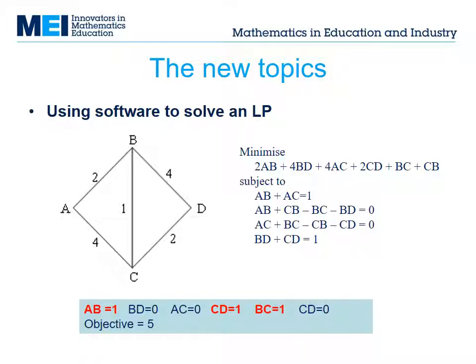You can find free LP solvers online, or you can use a solver in Excel to input the LP. The solver will produce an answer like the one at the bottom of this slide. Obviously this needs to be interpreted. The shortest path is from A to B to D, which has length 5.